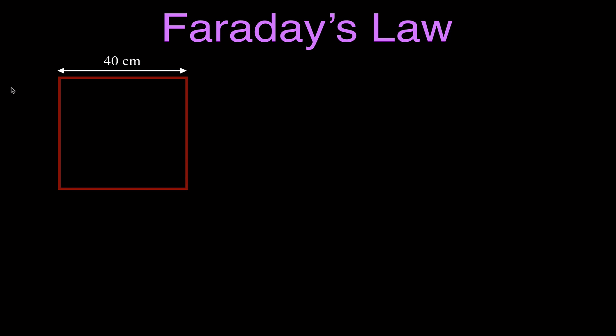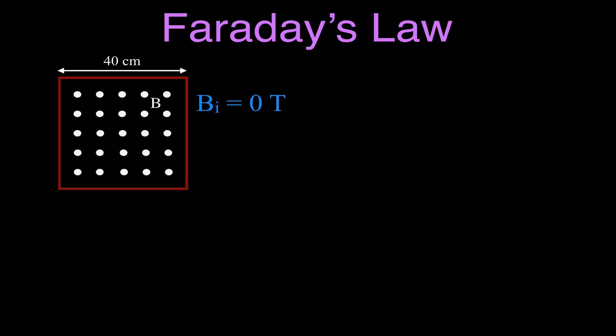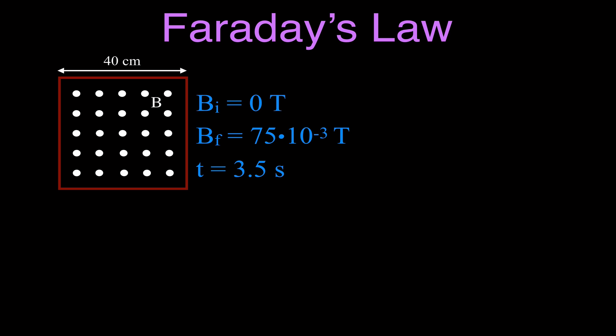This red square here is a loop of wire — a coil of wire — 40 centimeters on each side. We're going to talk first about changing the magnetic field. You can see there are no X's and no dots, so there's no magnetic field in that coil — the magnetic field is zero teslas. I can change that over time by increasing the magnetic field strength, and now we have the magnetic field pointing out of the board. The final magnetic field strength is 75 milliteslas, or 75 times 10 to the minus 3 teslas, and that change occurred over a 3.5 second interval.